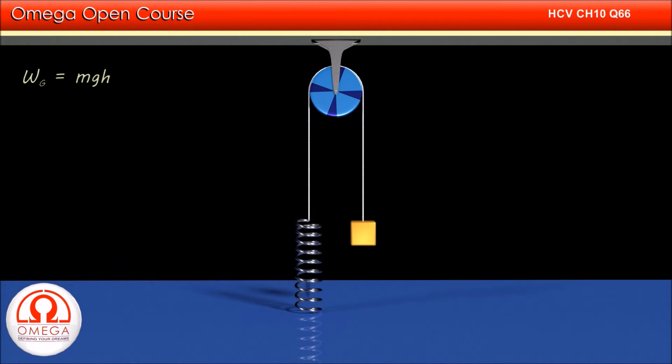The work done by gravity is mgh, where h is the height by which the block descends, that is 10 cm or 0.1 m. Putting the values, we get 1 × 10 × 0.1 = 1 J.